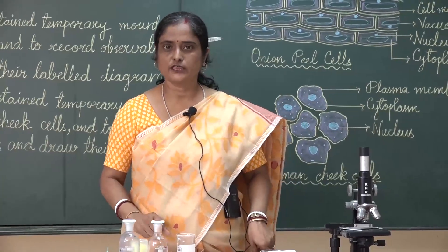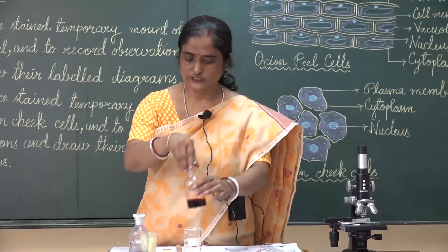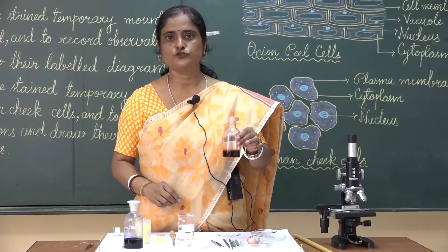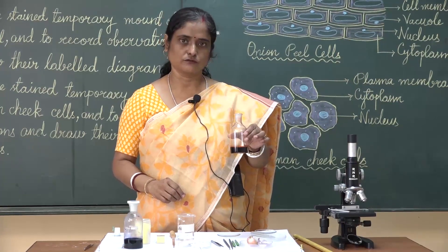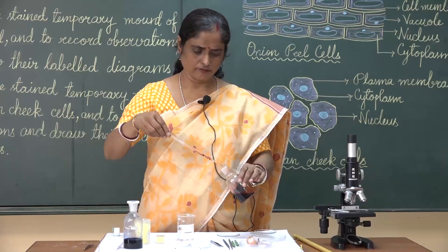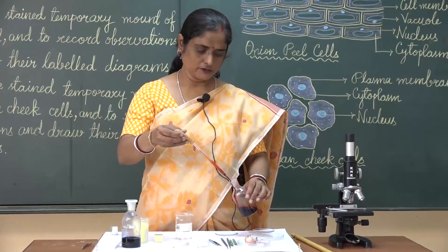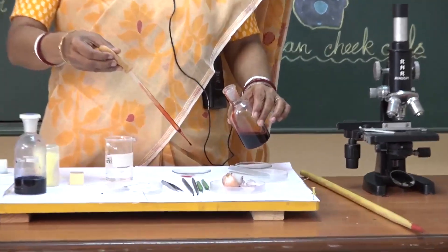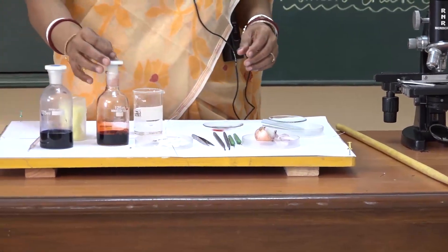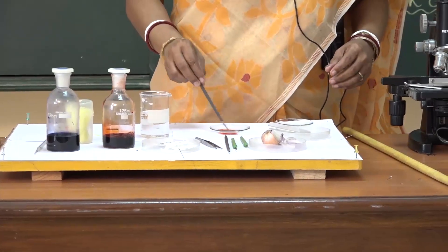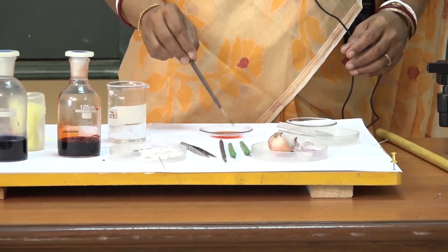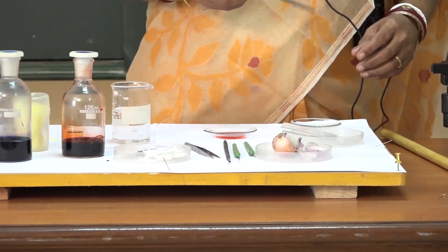Now we need to stain the material. This is the stain which is called Safranin, and this stain is required to stain the plant tissues. Take only a few drops of stain — just a few drops is enough. Let the peel take up the stain and wait for a few seconds.